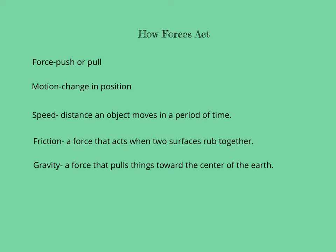On Friday, we're going to discuss speed, friction, and gravity. I'm going to define those now and then remind you of them again on Friday. Speed is the distance an object moves in a period of time. When we hear the word speed, we often think of how fast a car is going, and we measure that in miles per hour, miles being the distance it goes in one hour.